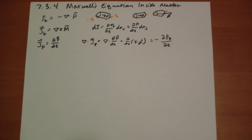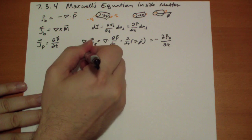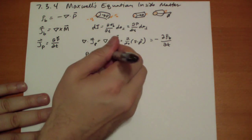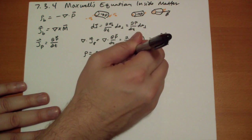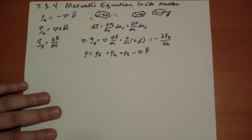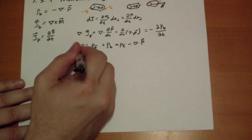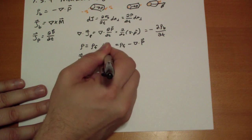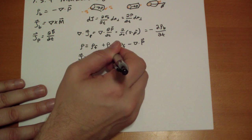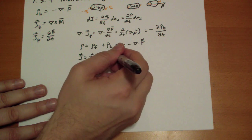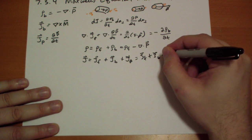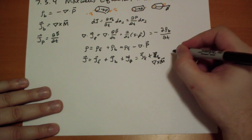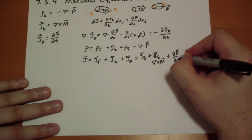The total charge density rho is equal to the free charge plus the bound charge due to the polarization, which gives us minus the divergence of the polarization. The total current density is equal to the free current plus the bound current due to the magnetization of the material, plus the current due to changes in polarization. So we can rewrite that as J_f plus the curl of the magnetization plus the change in the polarization over time.